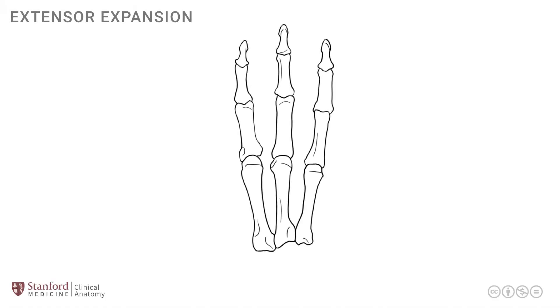In this lesson, we will review the structure of the extensor expansion, which is the location where the extensor tendon meets the various other intrinsic muscles.